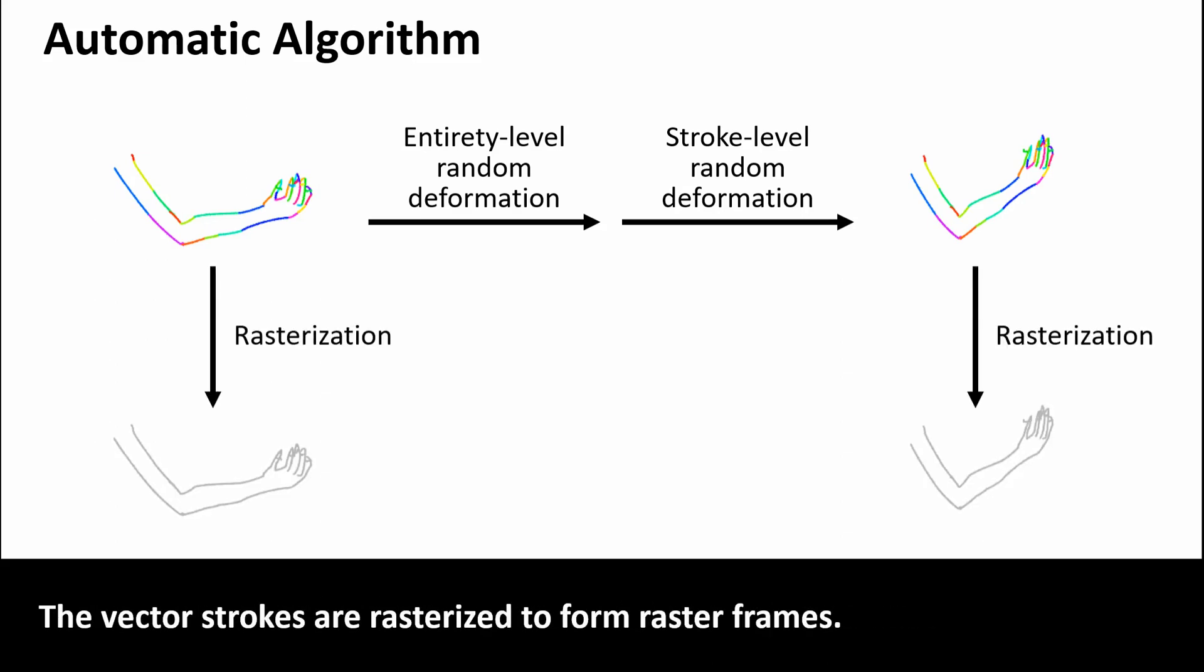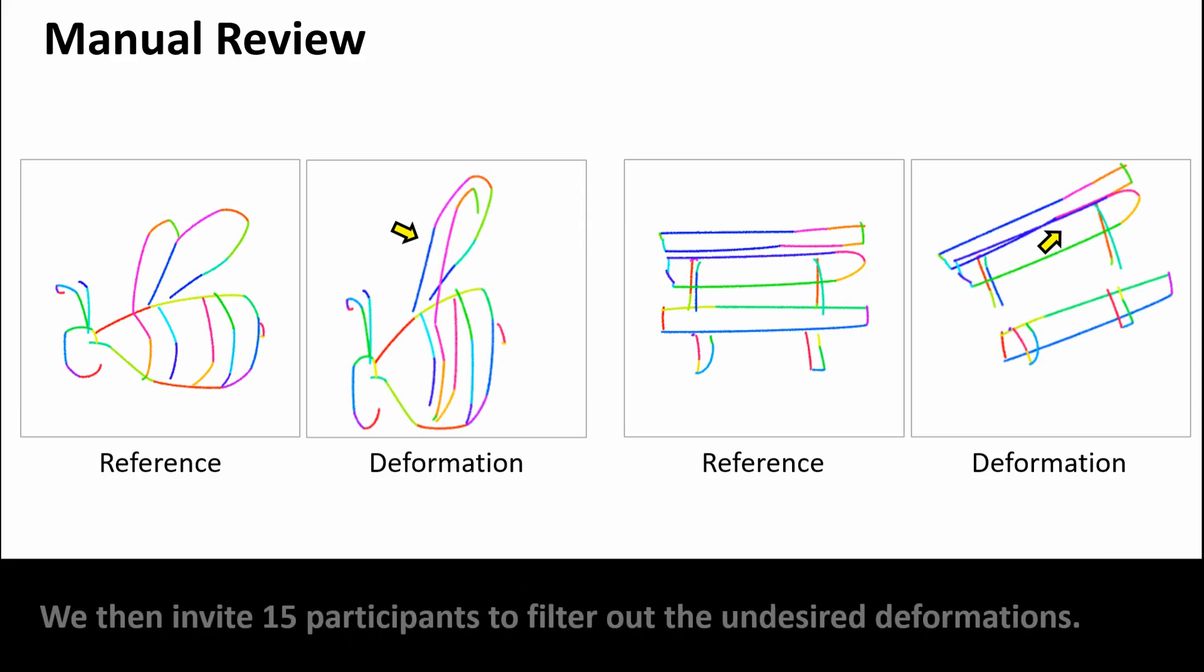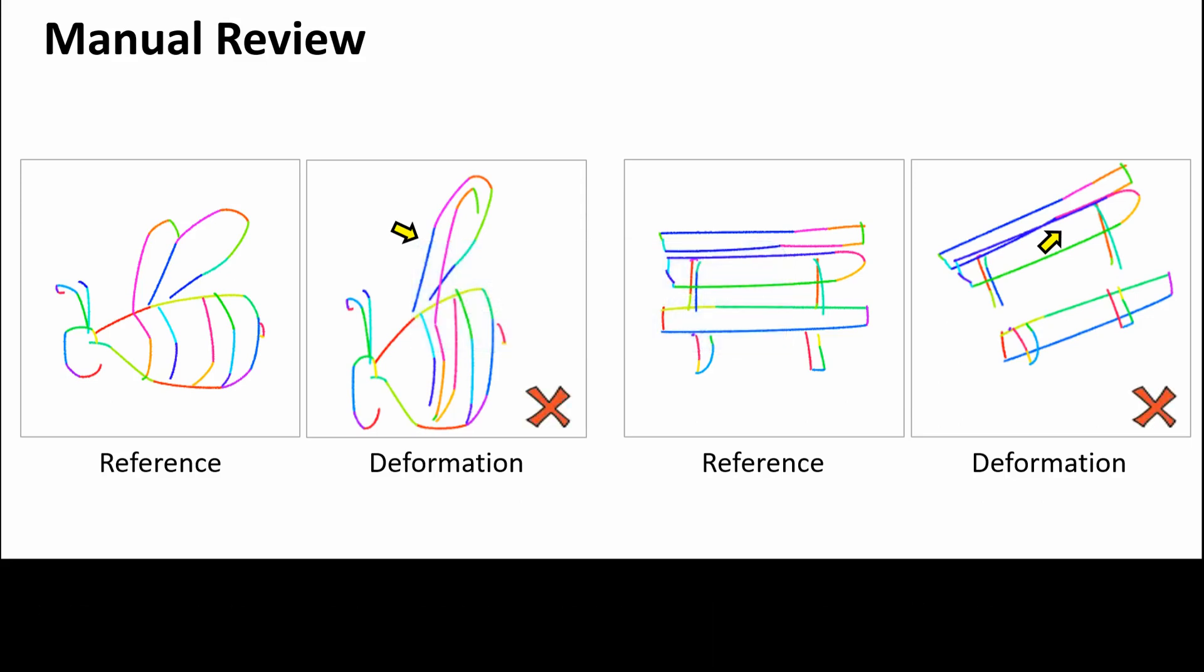The vector strokes are rasterized to form raster frames. The automatic algorithm tends to induce artifacts such as unreasonable structure variation and stroke ambiguity and occlusion. We then invite 15 participants to filter out the undesired deformations.